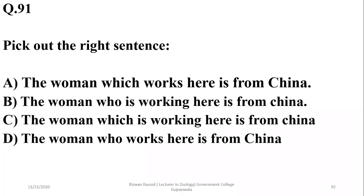Pick out the right sentence: 'The woman which works here is from China.' The correct version is 'The woman who works here is from China.' Using 'which' or 'which is working' here is not suitable for a person. So the right option is D.